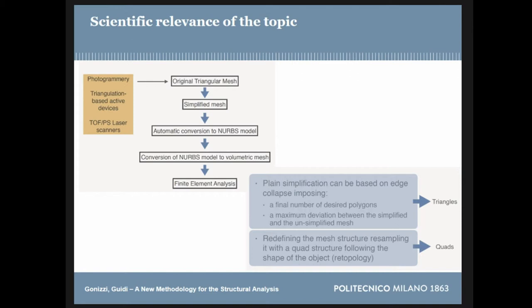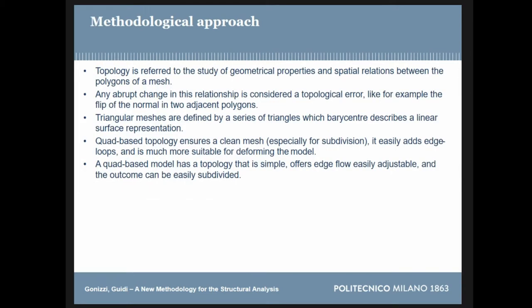Simplification of meshes can be done in two different ways. The first is using triangular mesh, where you can set the desired number of polygons or a deviation between the simplified and the original model. Or you can use quadrilateral elements with retopology, which allows you to redefine the mesh structure — it resamples the structure and follows the shape of the object. The main big problem is topology. Dealing with topology is really difficult, and many problems arose while trying to clean topology to create volumetric models for FEA, especially with triangular meshes.